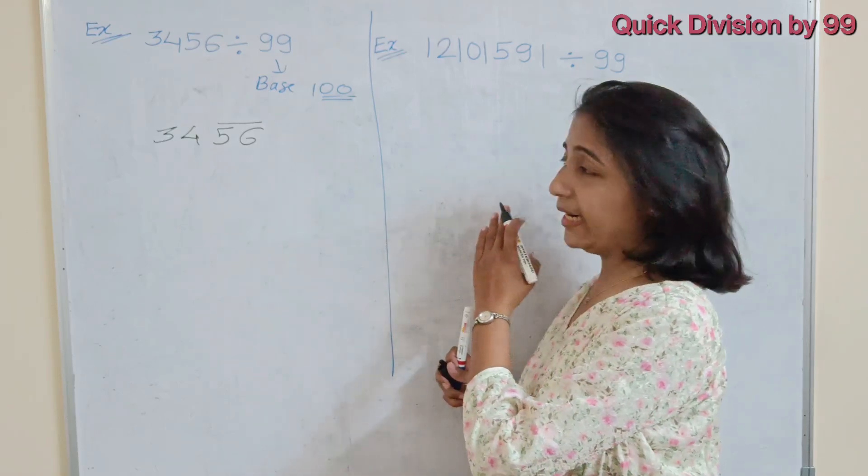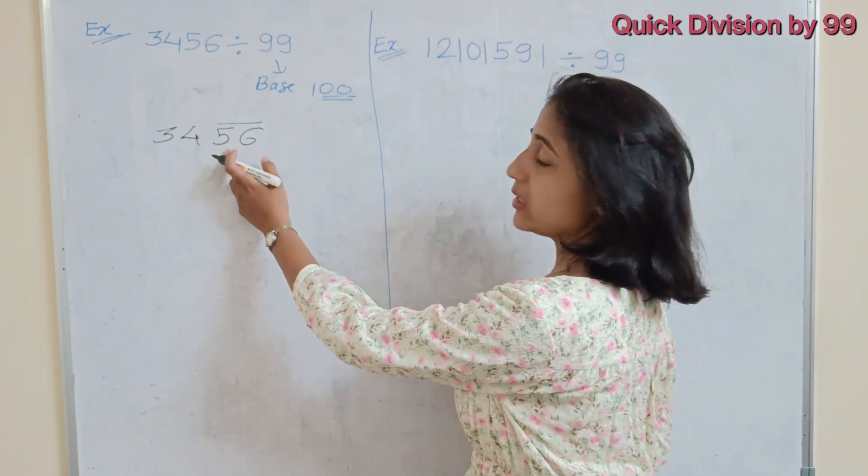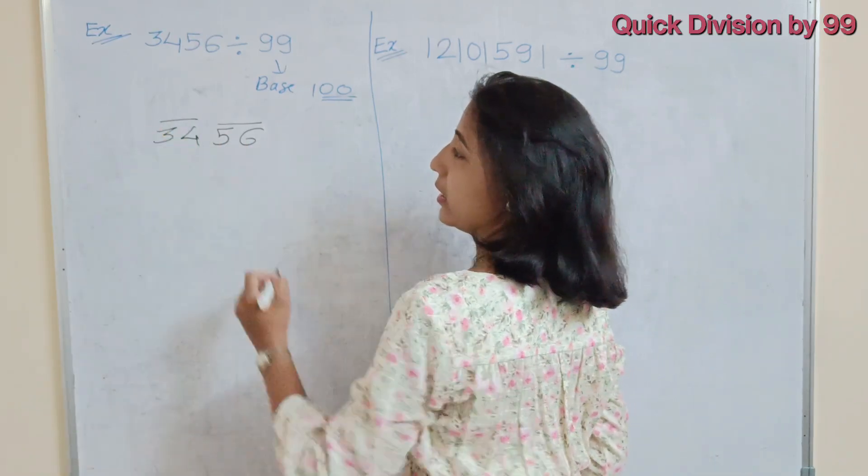Start from right side. So here 56 is the first pair. Next is 34.